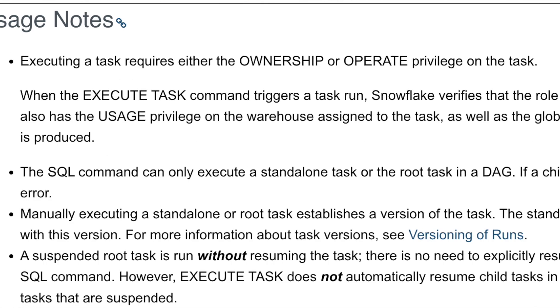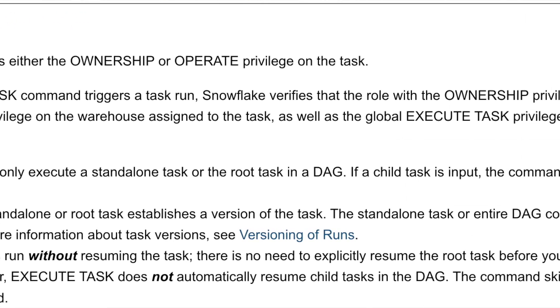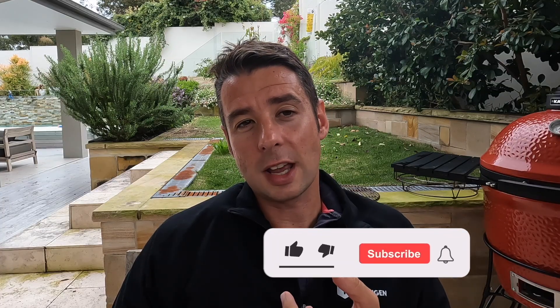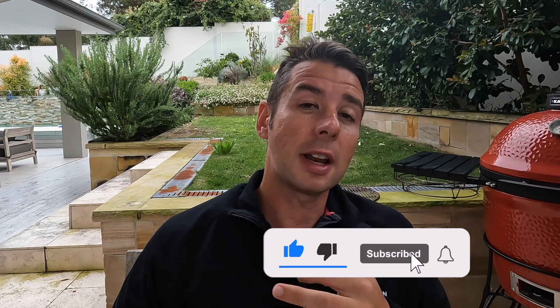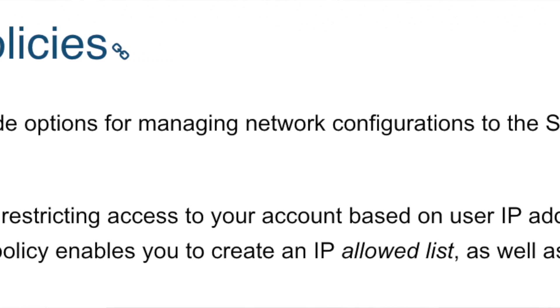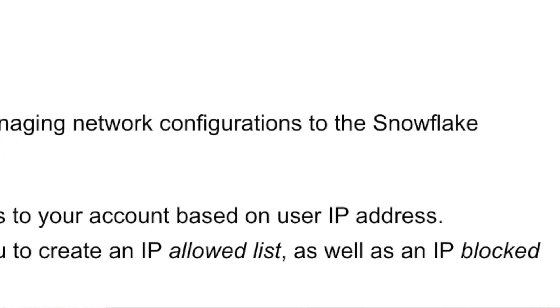Make sure you're clear on how to grant and revoke privileges, as well as how to check what privileges certain roles have. Specifically, I'd recommend checking out tasks and how you grant execute on a task, and what role you need to have to be able to do that. Network policies can be set at the account and user level only. This allows you to add an additional layer of security on top of the out-of-the-box functionality Snowflake comes with — preventing certain IP addresses from accessing Snowflake.